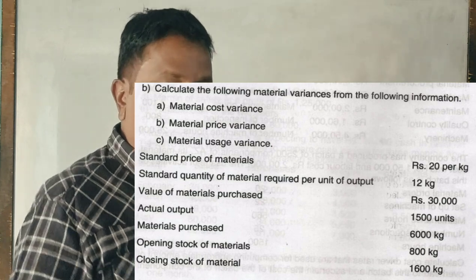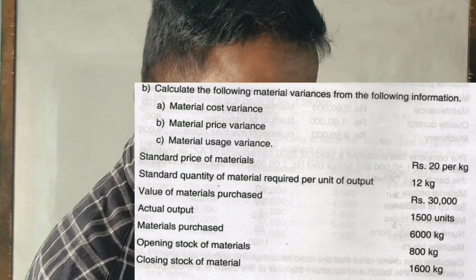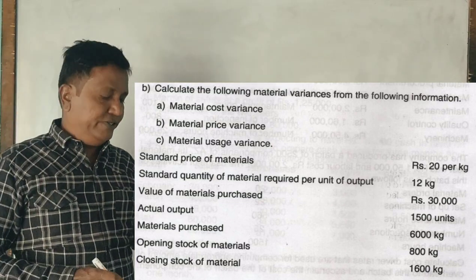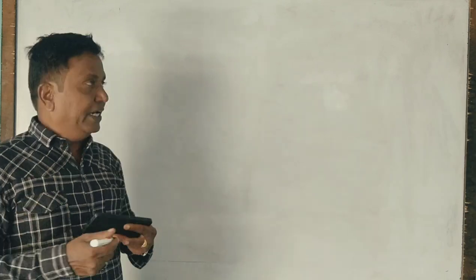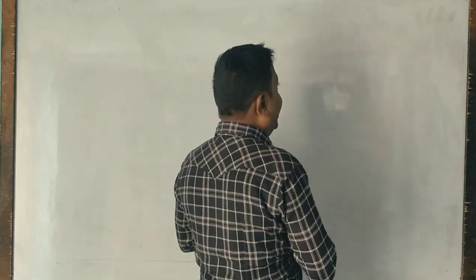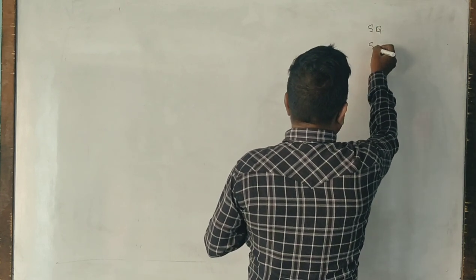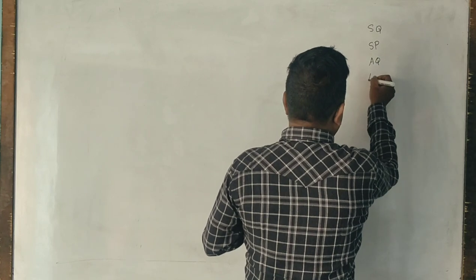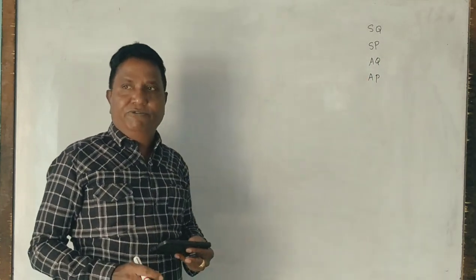To calculate material cost, material price, and material usage variance, we need standard quantity, standard price, actual quantity, and actual price. All these four elements are required for us.